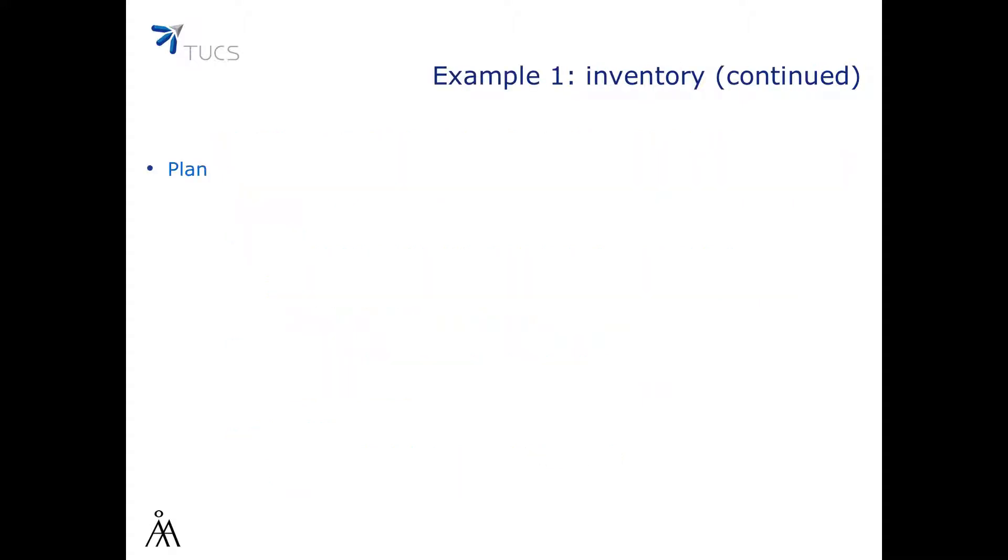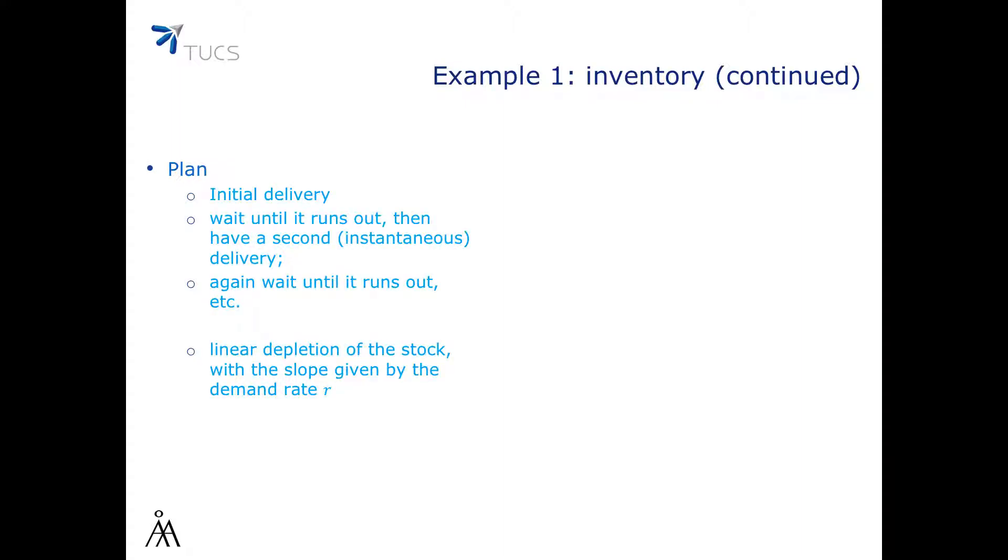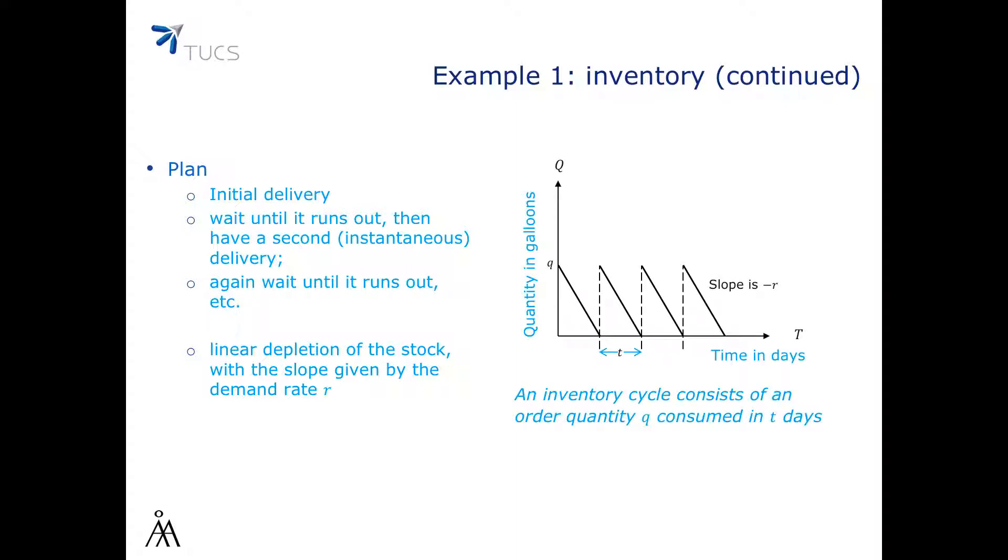Here is a simple initial idea for how to run this gasoline station. We could have an initial delivery and we could then wait until it runs out, then have a second delivery and let's assume to simplify things that it's an instantaneous delivery. And again, wait until it runs out and so on. So according to our model, we will have a linear depletion of the stock with the slope given by the demand rate r. Visually, the evolution of the stock looks like this.